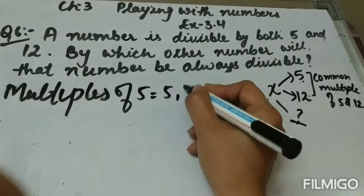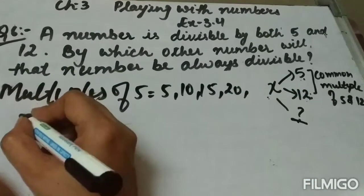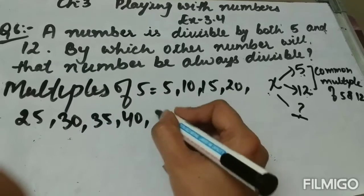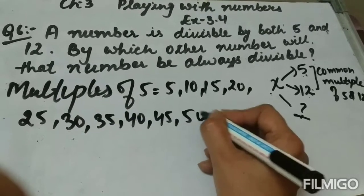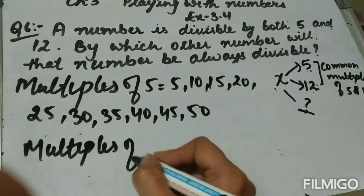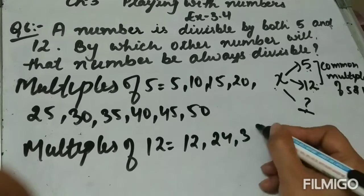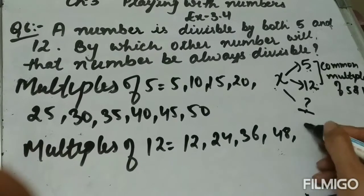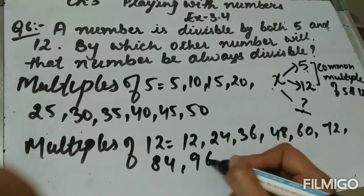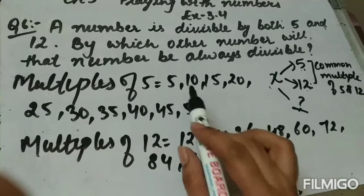Multiples of 5 are: 5, 10, 15, 20, 25, 30, 35, 40, 45, 50. Multiples of 12 are: 12, 24, 36, 48, 60, 72, 84, 96, 108, 120.